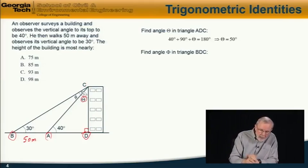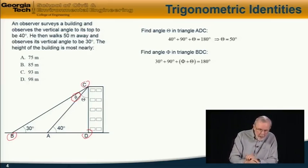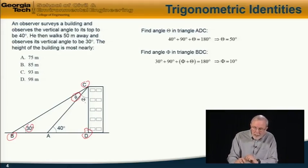Next, we want to find angle phi by observing triangle BDC. Again, the sum of the angles in that triangle equals 180 degrees, therefore 30 plus the right angle plus phi plus theta equals 180, and we already know theta, so the angle phi is 10 degrees.